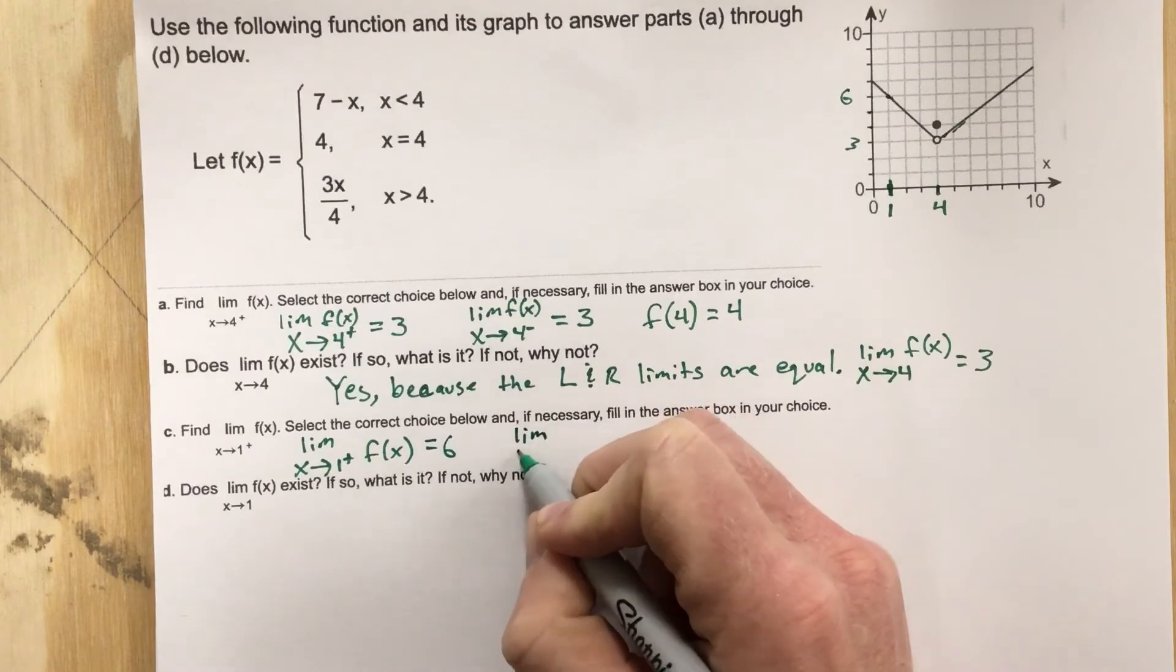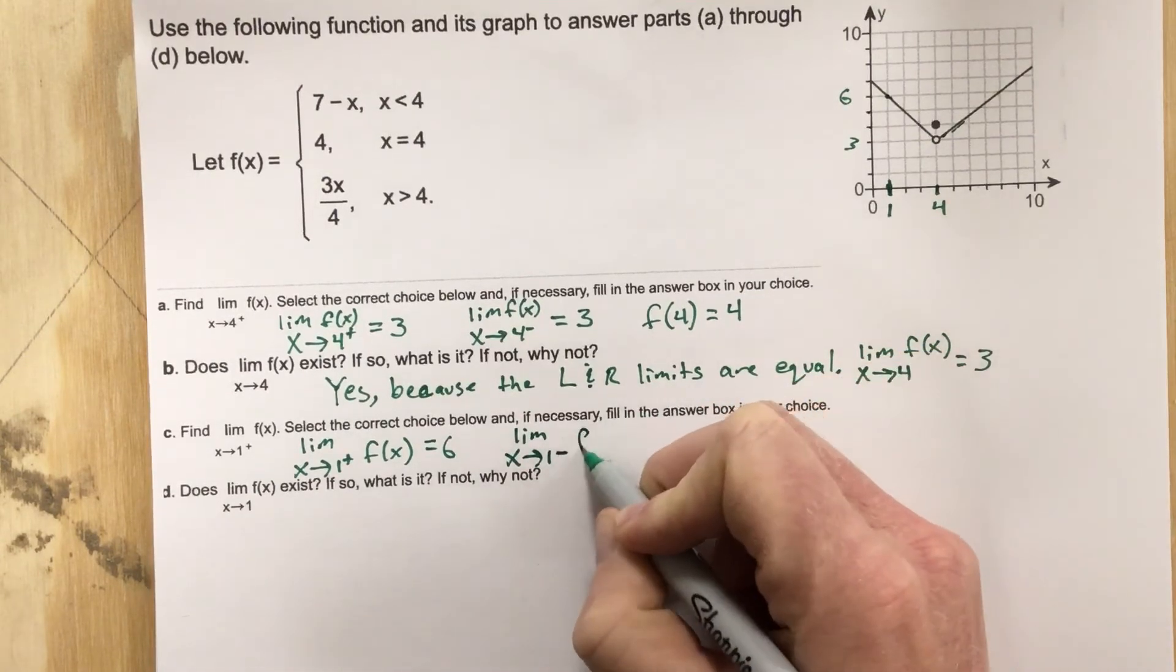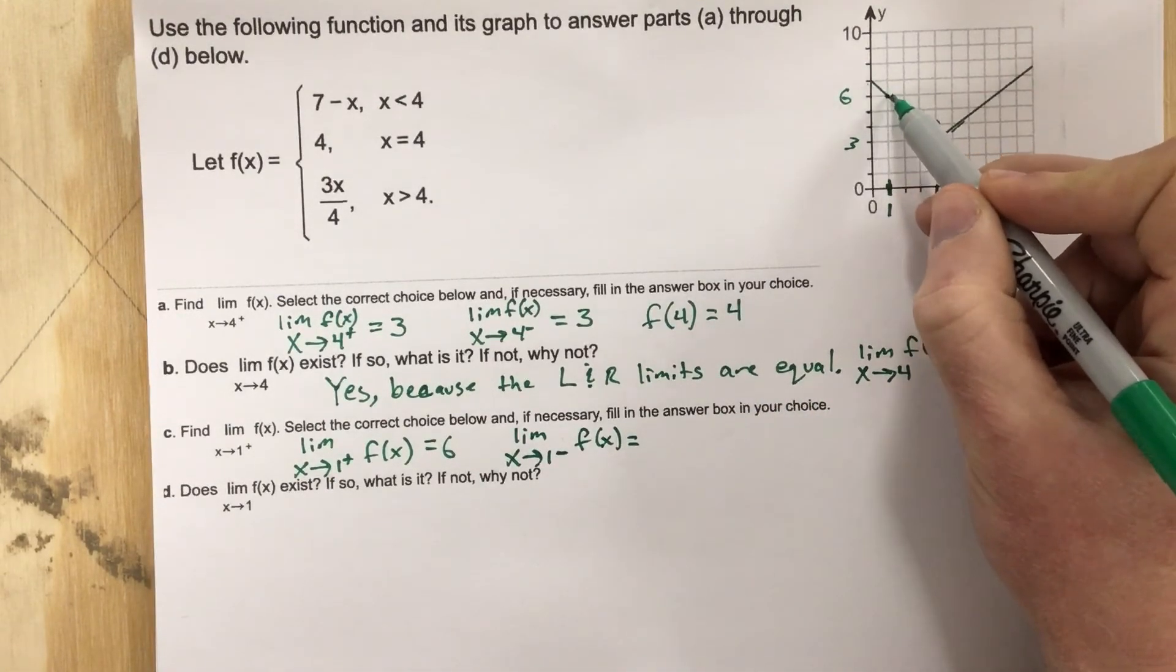If we do the limit as x approaches 1 from the left of f(x), we come from the left side, we also get 6.